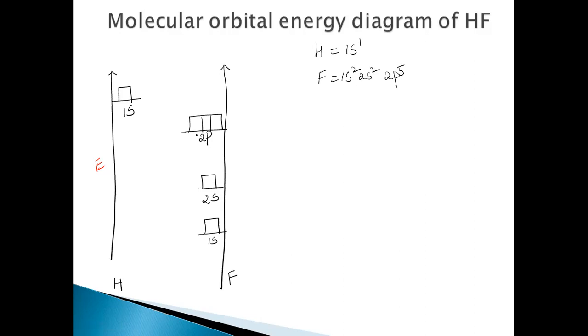You can see that the fluorine 2P orbital is lower in energy compared to the hydrogen 1S orbital. So even the 2P orbital of fluorine is at a lower energy level than the 1S orbital of hydrogen.